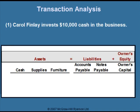We use charts like this to help us practice analyzing transactions. This chart is based on the accounting equation: assets equal liabilities plus owner's equity. Under assets, we have three different kinds: cash, supplies, and furniture. Under liabilities, we have two types: accounts payable and notes payable. Under owner's equity, we have owner's capital.